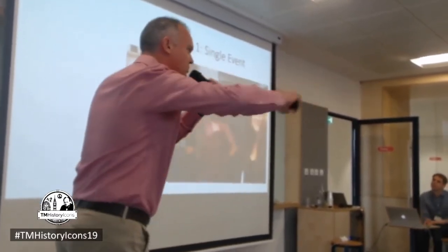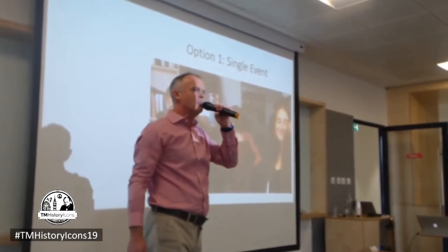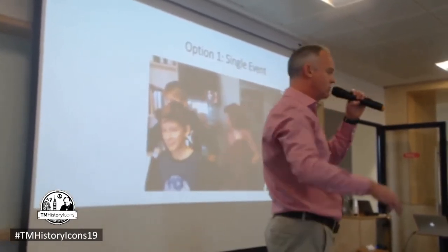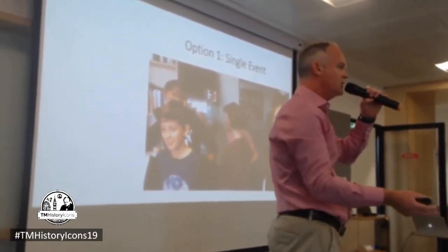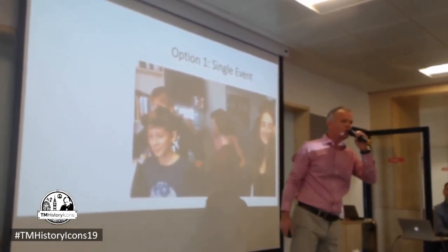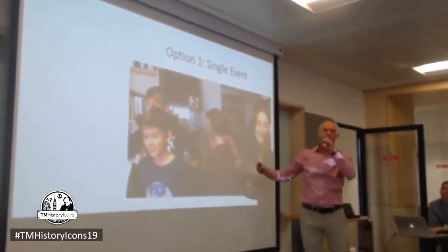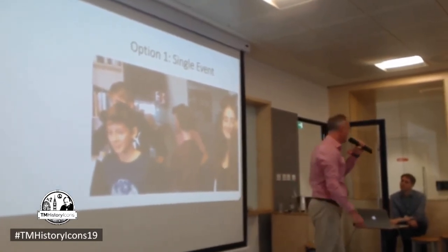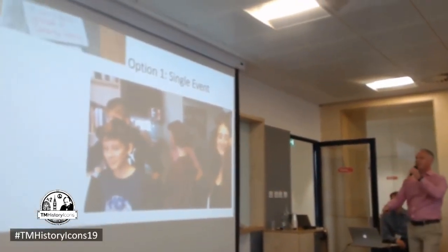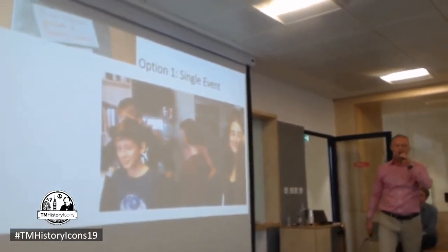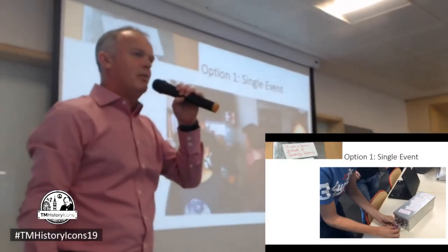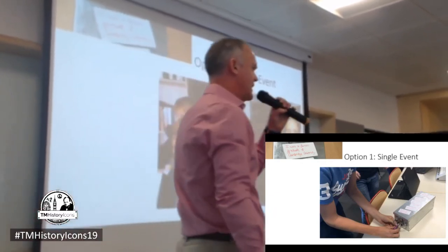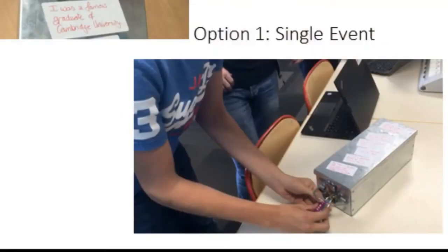So just to elaborate: you put the box outside your room. On day one, you give them one clue about the event or individual that's inside the box. Each subsequent day you put a fresh clue, and then each break time they have a chance to try to unlock the box. For example, on Monday morning they see outside my room that the box has a clue: 'I was a famous graduate of Cambridge University.' Now they've got a lock that's got a date on it, so they probably guess that it's the birth date or death date of that particular individual, and they might have a little go.